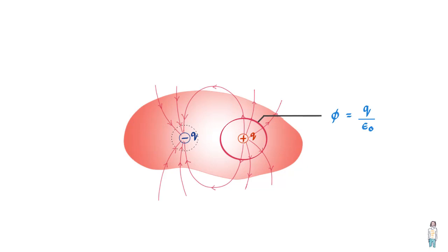While if we take this as a Gaussian surface, flux would be minus Q upon epsilon naught because this surface encloses charge minus Q. And finally, if we take this as a Gaussian surface, what would you think should be the flux value through this surface? Well, it'll be zero simply because it has no charge inside the surface.